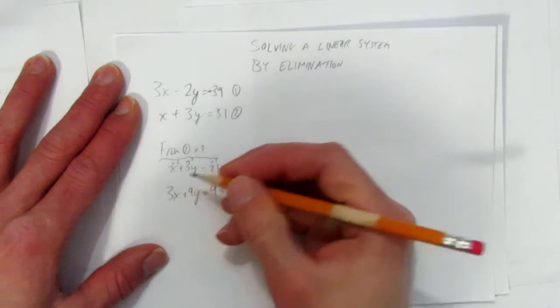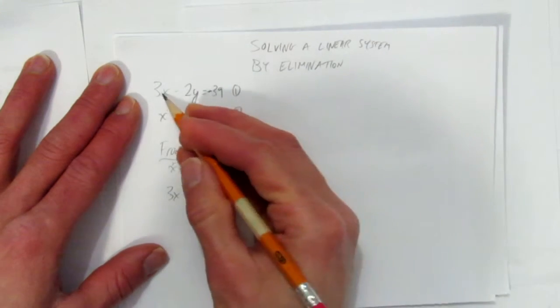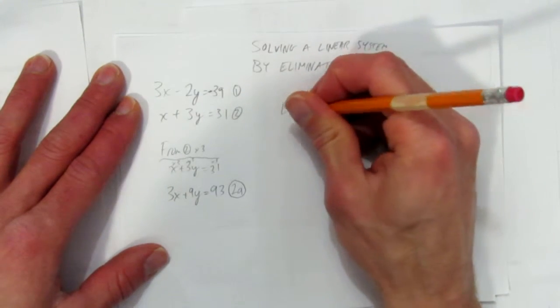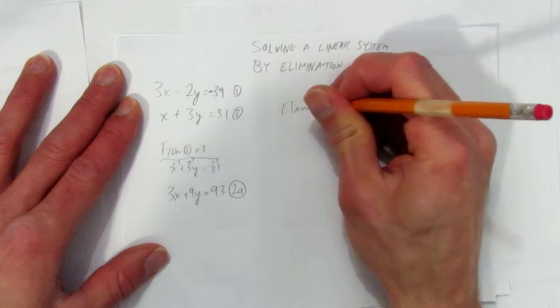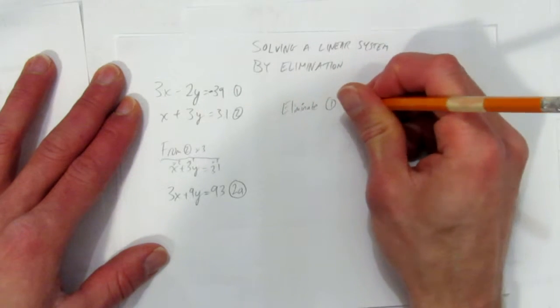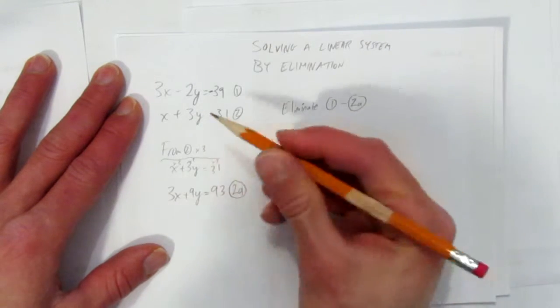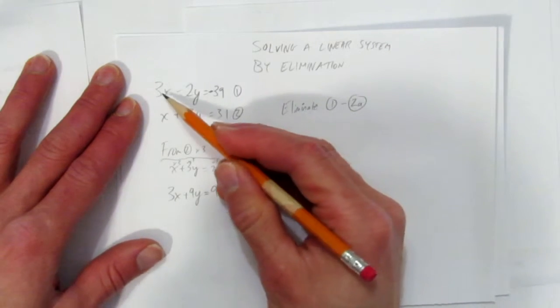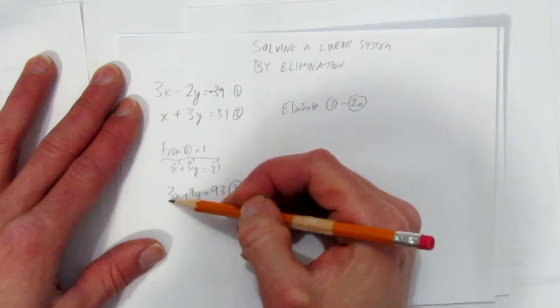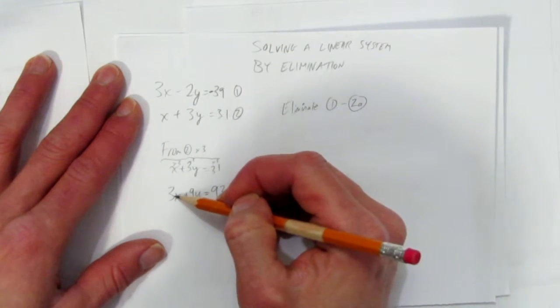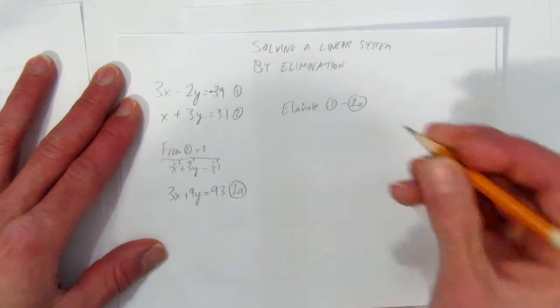And now that we have the same coefficient in equation 2 as equation 1, we can eliminate. That is, we're going to take equation 1 and subtract equation 2a. Note that if you had opposite signs, say this was 3x and this was negative 3x, you would add them. But since they're the same coefficient, to eliminate them, we subtract.